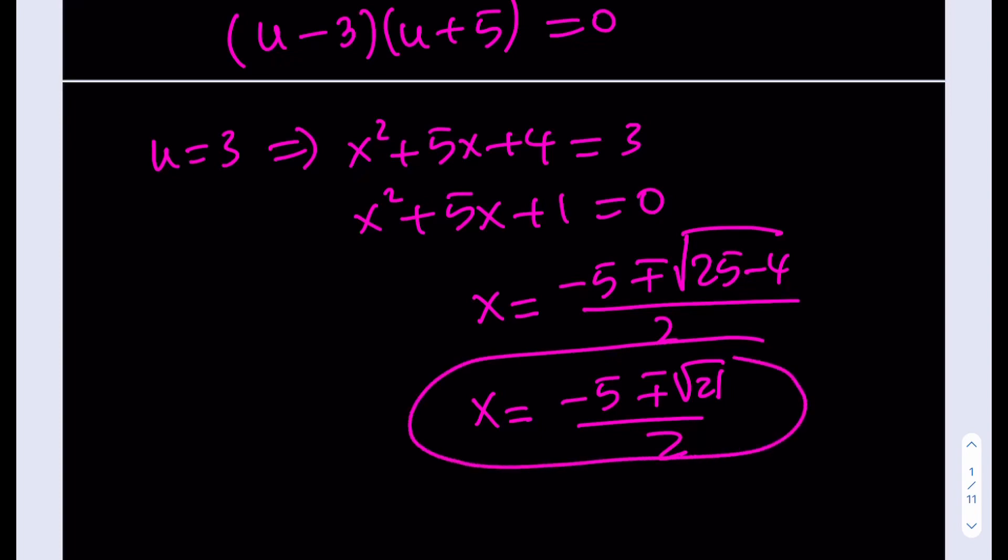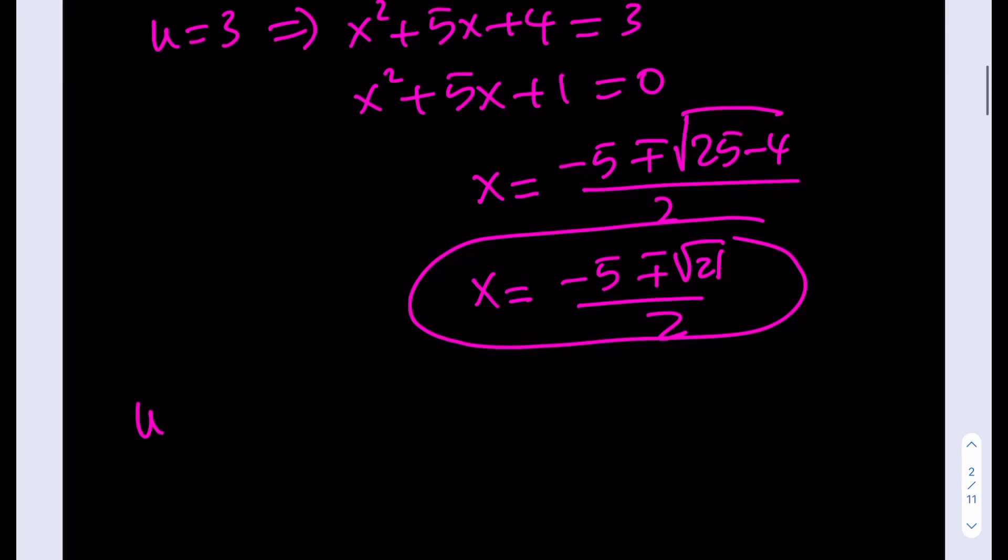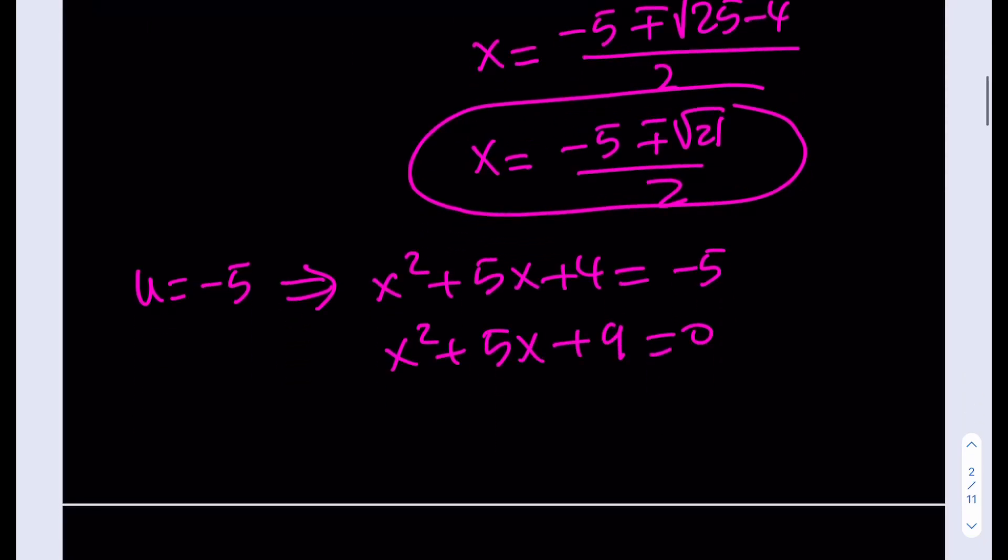And the other two are going to be coming from the fact that u = -5. Let's take a look at that one. If u = -5, then I get x² + 5x + 4 = -5, which means x² + 5x + 9 = 0. And from here, we're going to be getting (-b ± √(b² - 4ac)).